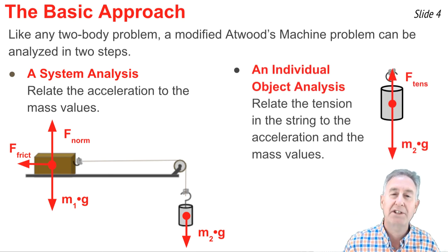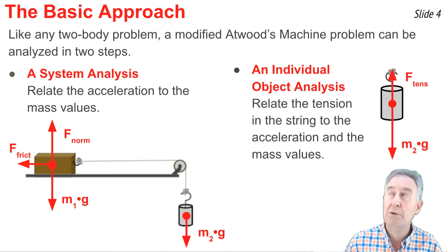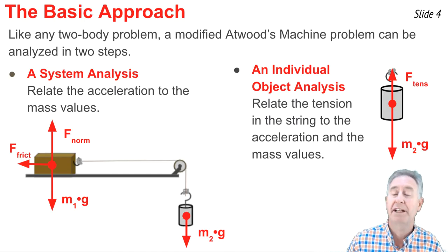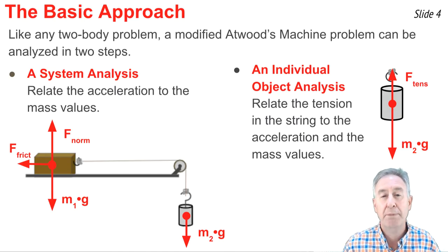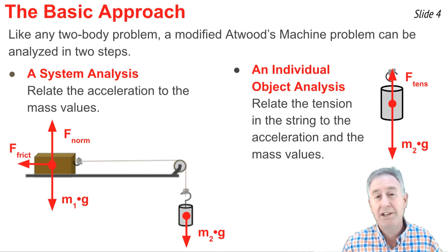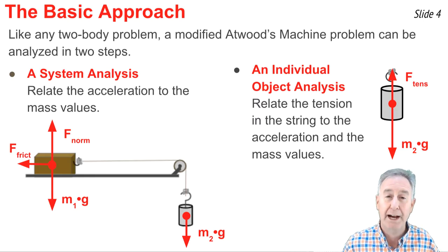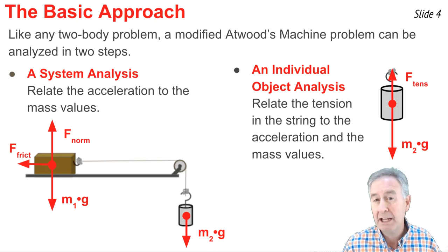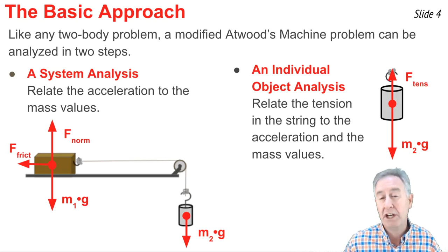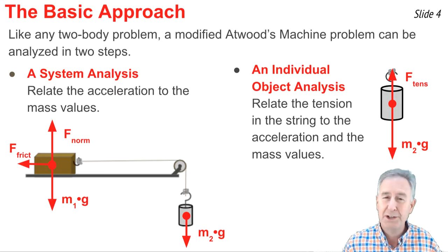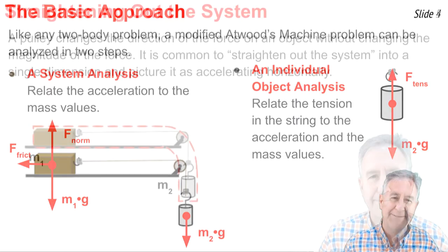The second analysis is called an individual object analysis. In this analysis, we pick either one of the objects — it doesn't matter which one. We draw a free body diagram for that object and then use F_net = ma to relate the acceleration of the mass to the tension in the string.